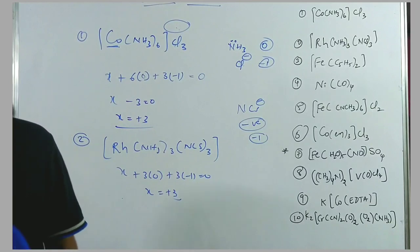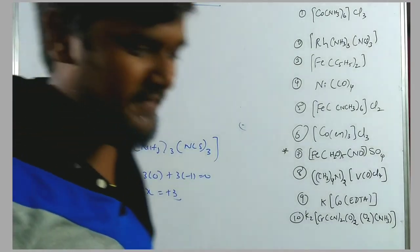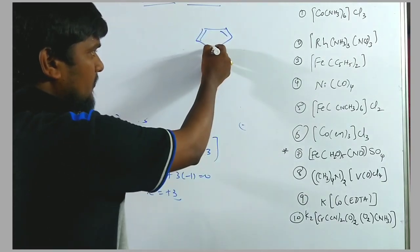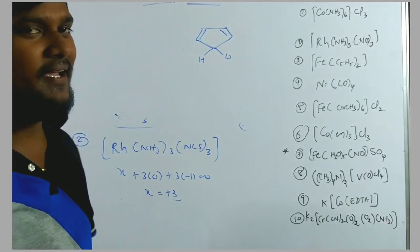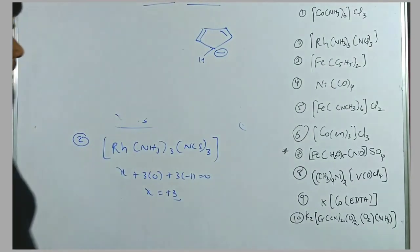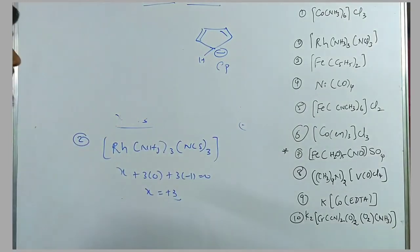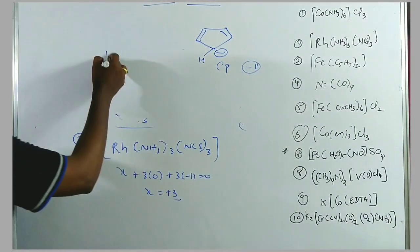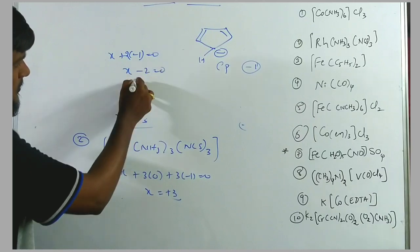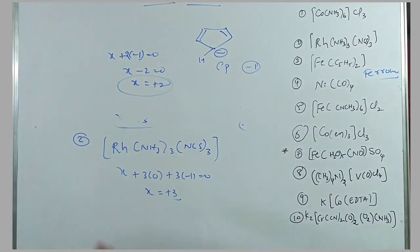Third example: [Fe(C₅H₅)₂]. C₅H₅ is cyclopentadienyl — cyclopentadiene (C₅H₆) where one hydrogen is replaced by a base, making it C₅H₅⁻ with charge −1. So: X + 2(−1) = 0, giving X − 2 = 0, X = +2. In ferrocene, the oxidation state of iron is +2.